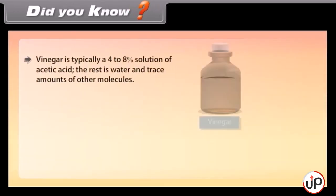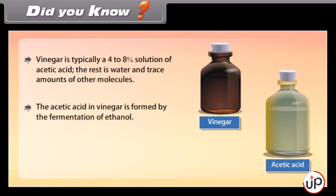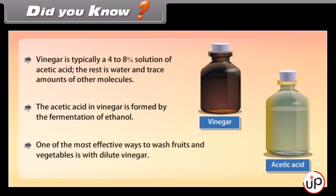Did you know? Vinegar is typically a 4-8% solution of acetic acid; the rest is water and trace amounts of other molecules. The acetic acid in vinegar is formed by the fermentation of ethanol. One of the most effective ways to wash fruits and vegetables is with dilute vinegar.